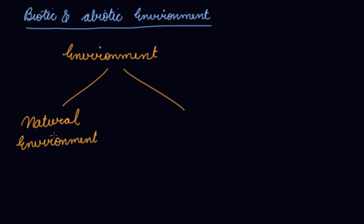In this video we will be studying about the biotic and abiotic environment. See, our environment is of two types: one is natural environment that you get naturally from this earth as a gift, and one is a man-made environment. Now your natural environment is further divided into two parts, that is biotic and abiotic.